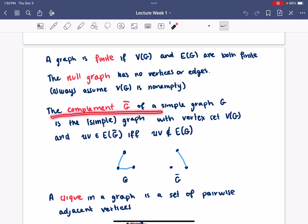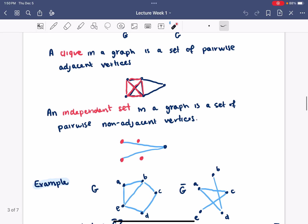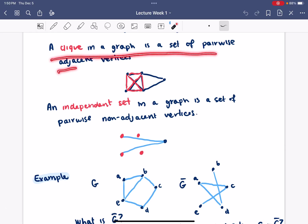The complement of a simple graph is the graph with the same vertex set, and edges are in there if and only if they're not in the original graph. Here's a little example. It turns out that the complement of a simple graph will also be a simple graph. A clique in a graph is a set of pairwise adjacent vertices. In this picture, we have four vertices and there's an edge going between every pair of them. So, that's called a clique.